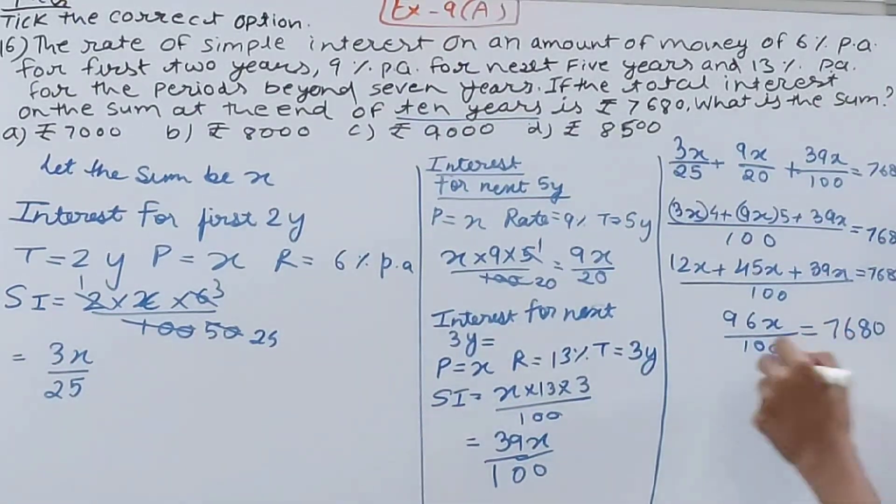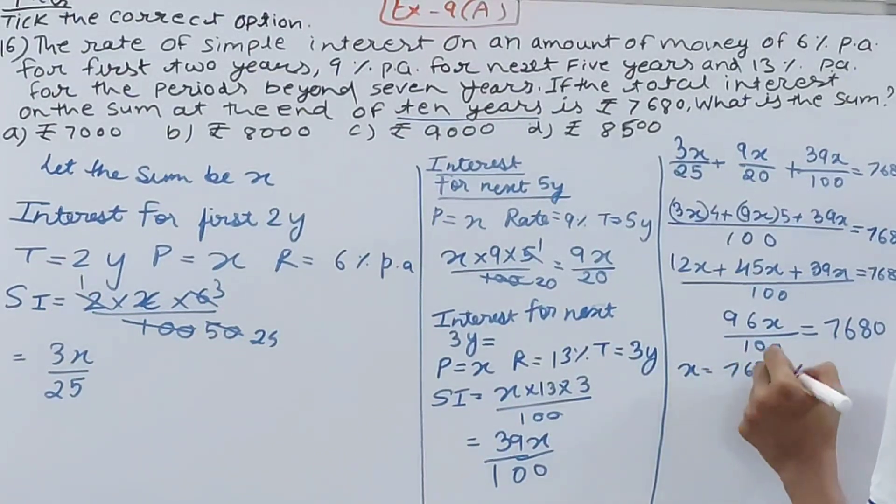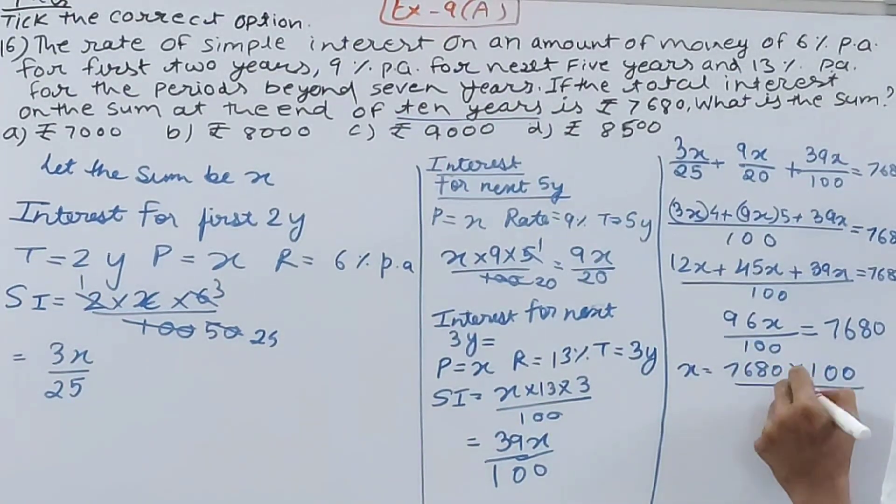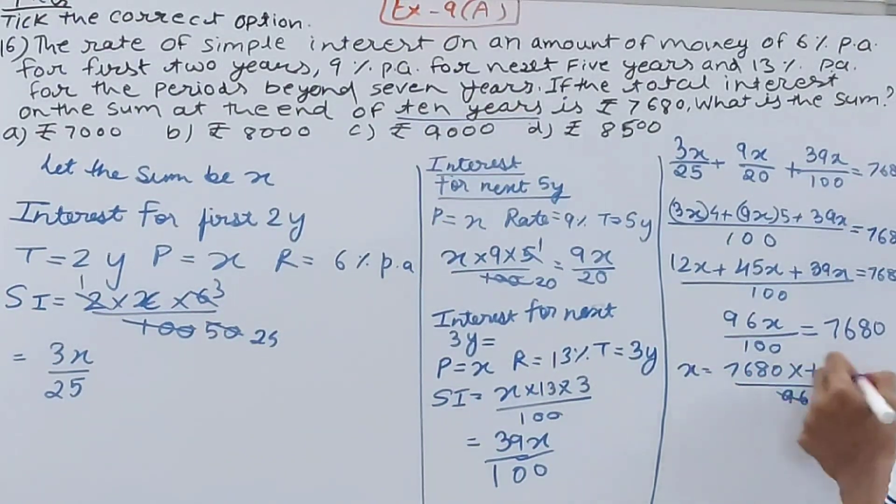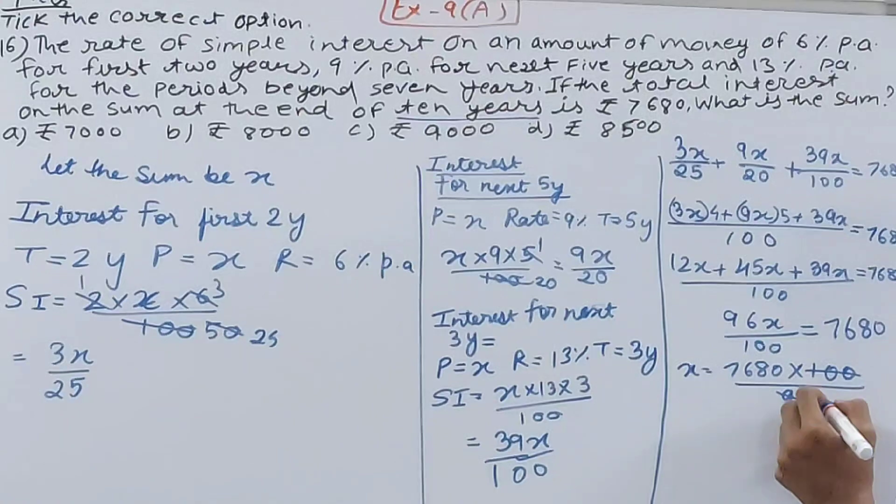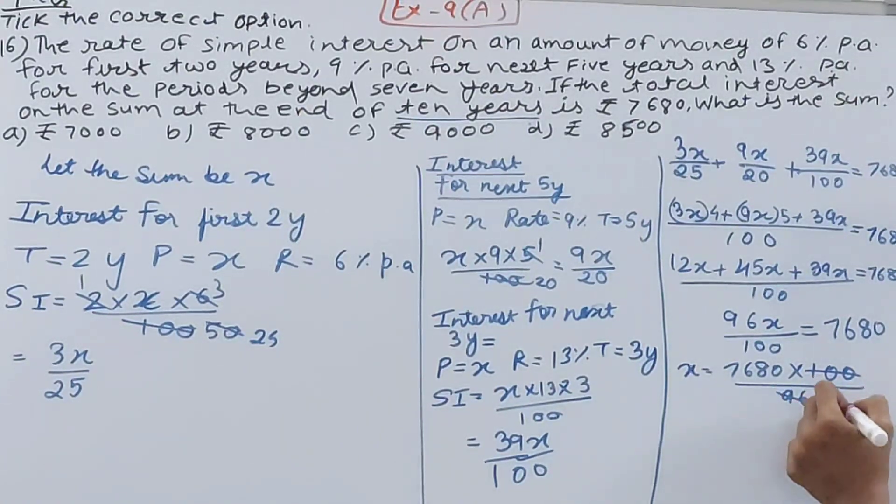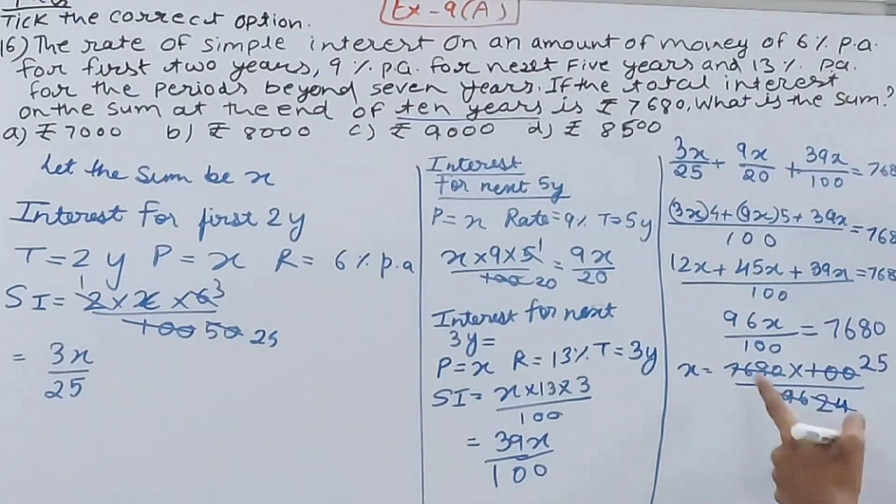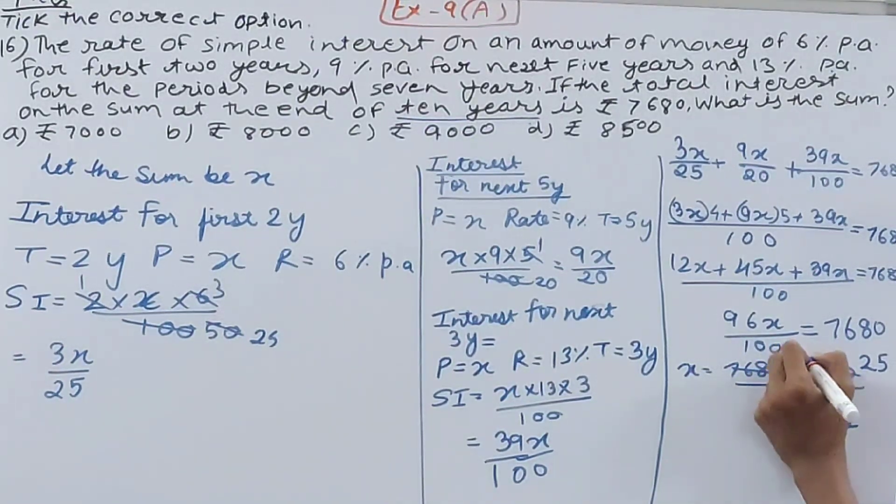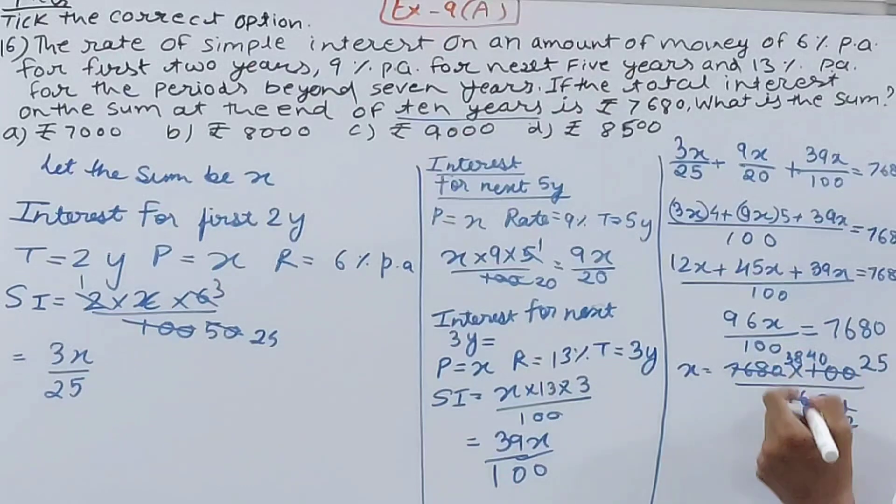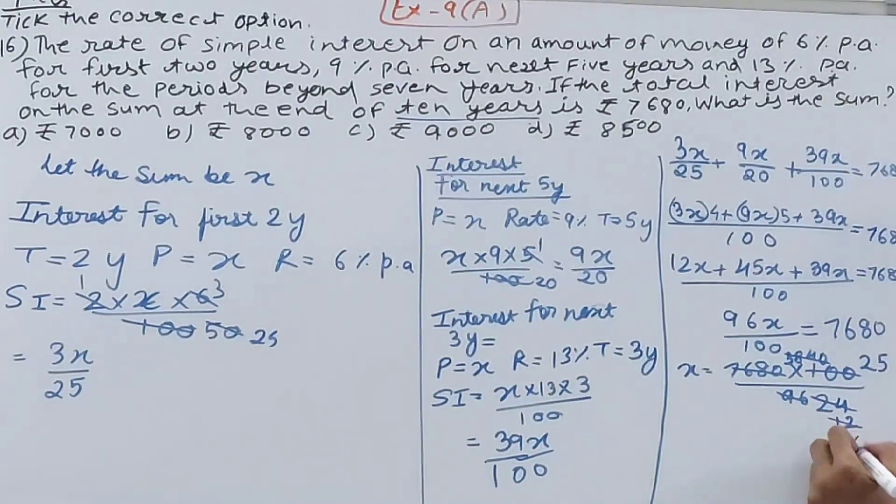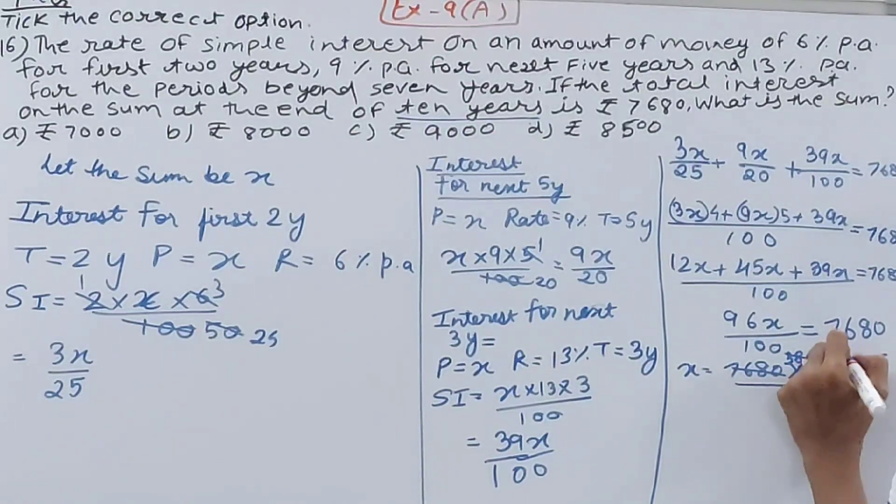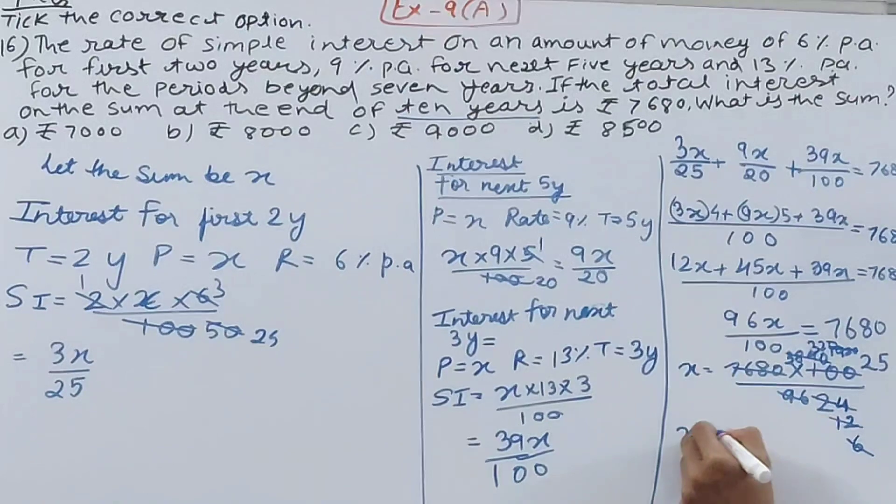Now we'll take x equals 7680 times 100 by 96. I'll cancel this, so 24, 25. Now I will cancel 24 and 7680 by 2. So this will go 12 times, this will go 3, 1, 8, 4, 0. And again cancel, cancel. So this will go 6 times, this will go 1, this will go 9, 2, 0. Now I'll cancel directly by 6.